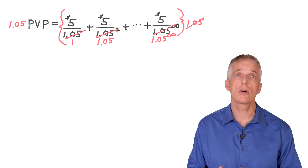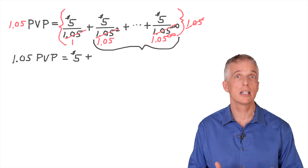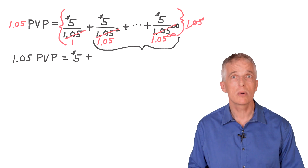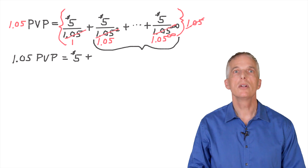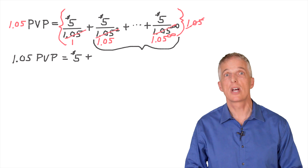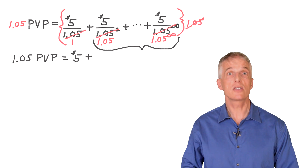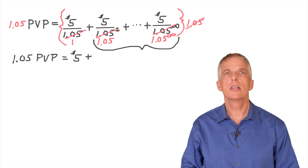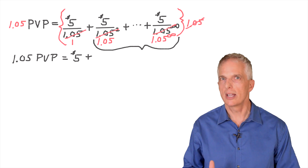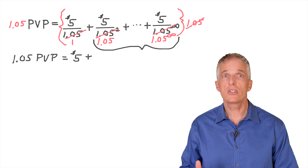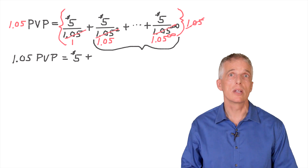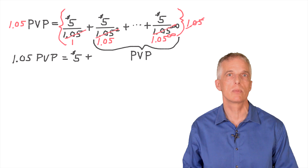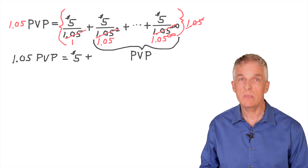I end up with 1.05 times PVP on the left-hand side of this equation. On the right-hand side, start with the $5. Notice the remaining portion of the right-hand side of the equation is the infinite summation of $5 discounted at 5% forever. This is where the clever trick comes into play. Notice that this summation is the same problem that we started with, so we can merely substitute our abbreviation for the present value of a perpetuity, or PVP, for this infinite summation.